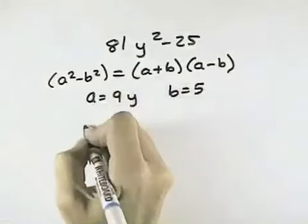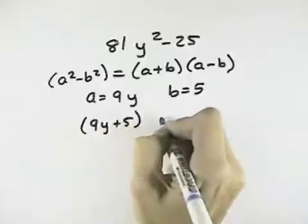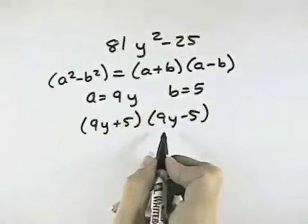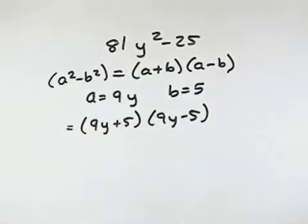So factoring that out, that means I would have (9y + 5) times (9y - 5). And I check each factor, but they cannot be broken down any further, so that would be completely factored.